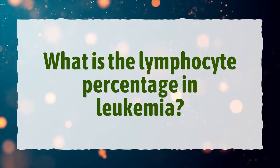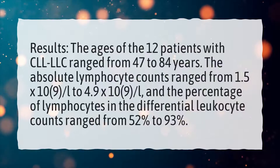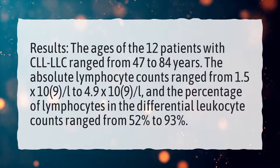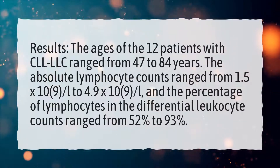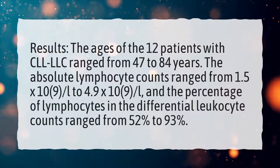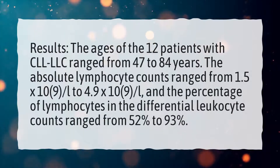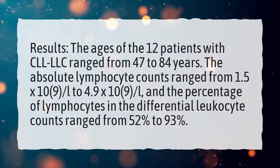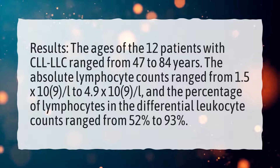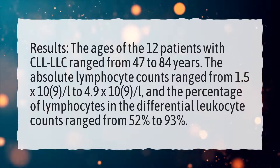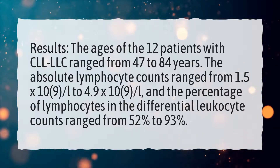What is the lymphocyte percentage in leukemia? The ages of the 12 patients with CLL ranged from 47 to 84 years. The absolute lymphocyte counts ranged from 1.5 x 10^9/L to 4.9 x 10^9/L, and the percentage of lymphocytes in the differential leukocyte counts ranged from 52% to 93%.